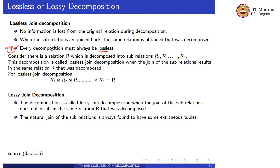Every decomposition must always be lossless. Suppose in relation R there is some inconsistency in data or redundant data. In order to normalize that relation R, we decompose it into R1 and R2. After joining R1 and R2, we should get the same relation R — the decomposition must always be lossless.